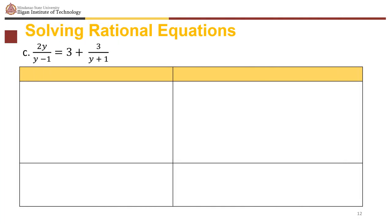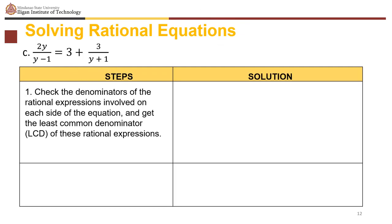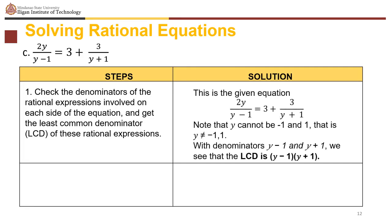For the last example of rational equations: 2y over (y minus 1) equals 3 plus 3 over (y plus 1). Check the denominators. Notice that y cannot equal negative 1 or 1. The denominators are (y minus 1) and (y plus 1), so the LCD is (y minus 1)(y plus 1).